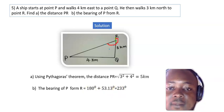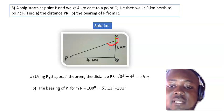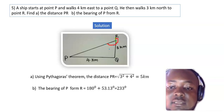So the bearing of P from R is 233 degrees. Thank you for your keen attention, have a great time.